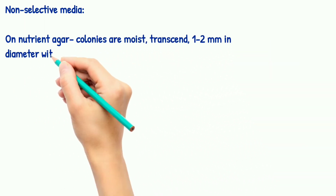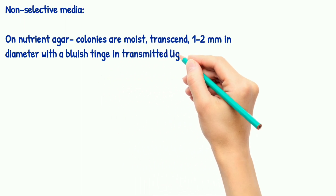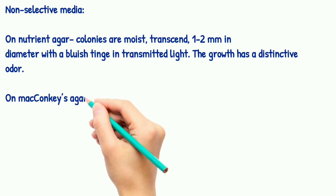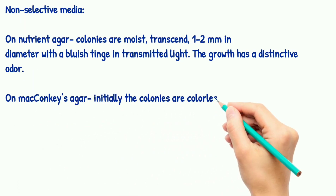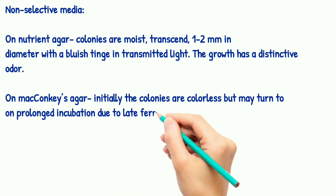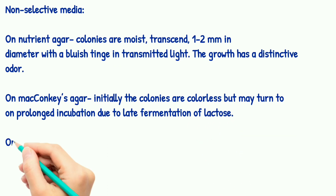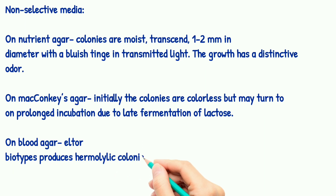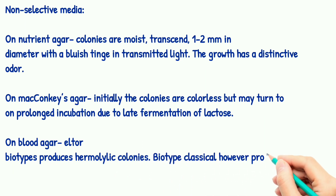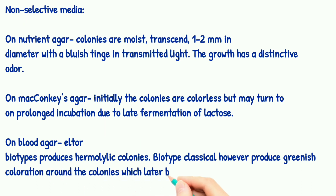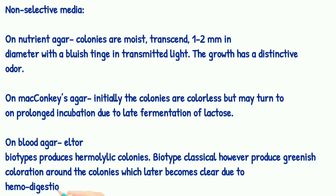On nutrient agar, colonies are moist, 1 to 2 mm in diameter, with a bluish tinge in transmitted light, and the growth has a distinctive odor. On MacConkey agar, the colonies are initially colorless but may turn pink on prolonged incubation due to fermentation of lactose. On blood agar, El Tor biotypes produce hemolytic colonies, while the classical biotype produces greenish colonies around the colonies, which later become clear due to hemodigestion.